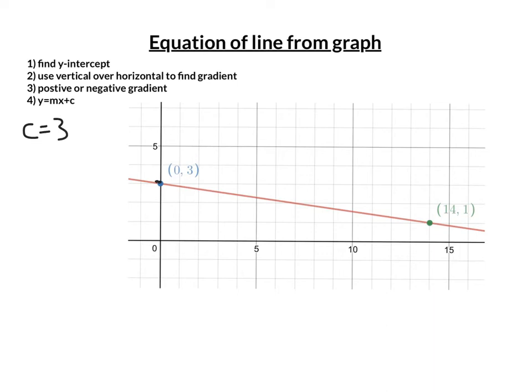I've then got to work out its gradient. So let's draw a right-angled triangle using vertical and horizontal lines. So m equals vertical over horizontal.